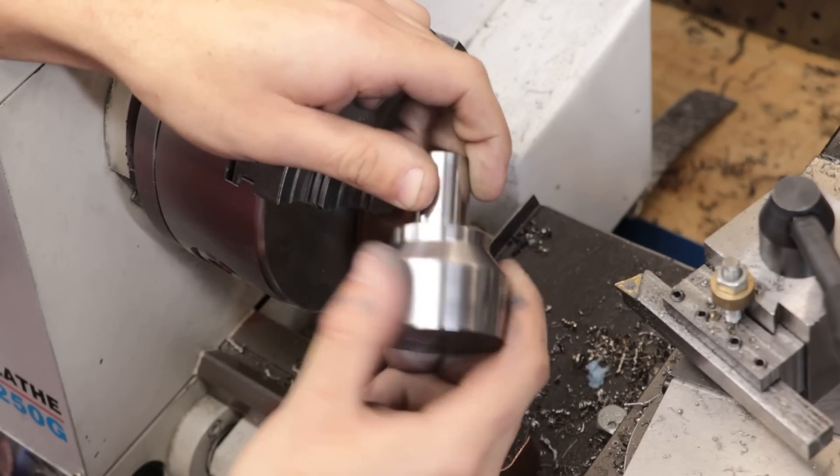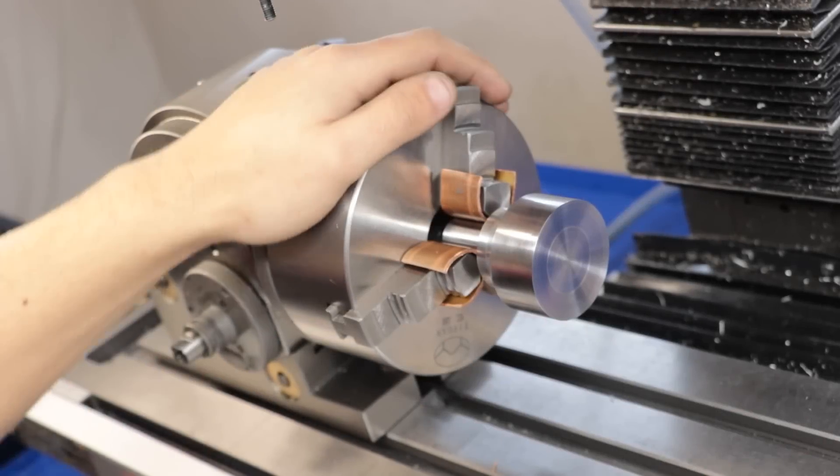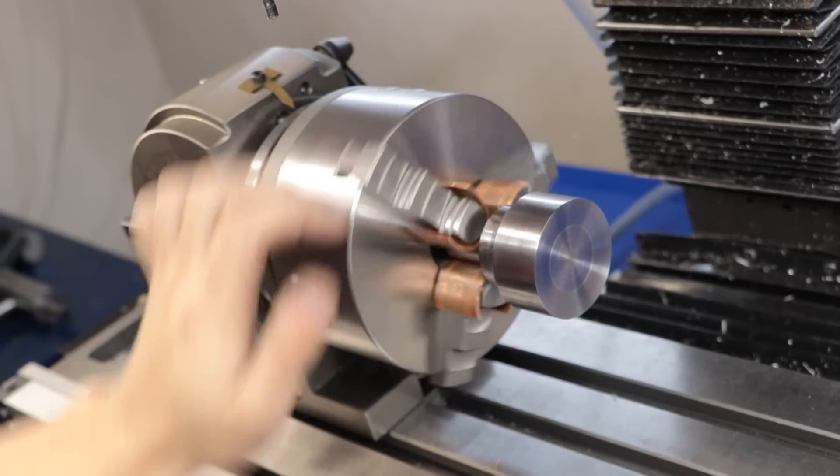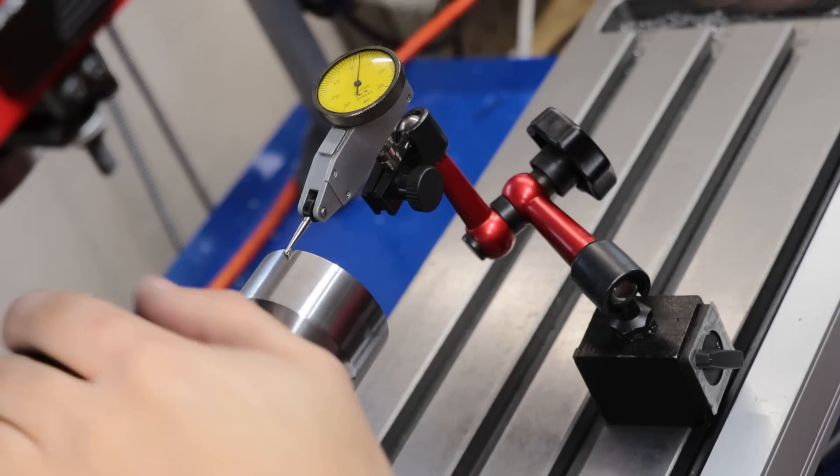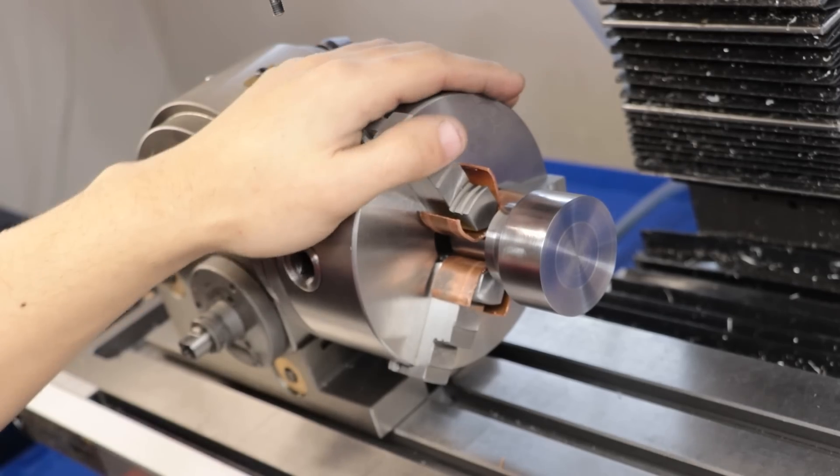So let's get it set up in the milling machine and get the insert seats cut. So I've got the parts set up in the dividing head and I've done my best to get rid of most of that runout.